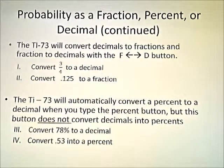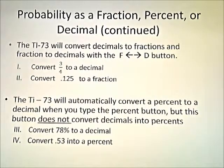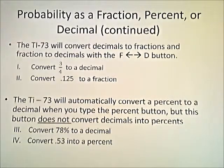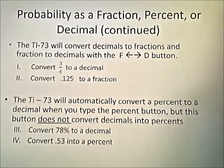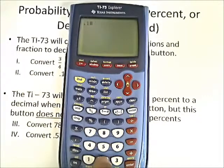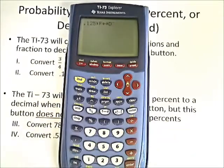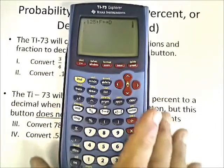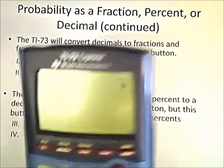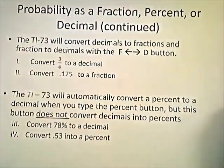We also want to convert 1.25 — actually 0.125 — to a fraction. So we're going to clear the calculator and type in 0.125. We're going to look at the function and enter that, and we get 0.125. That comes out as the fraction one-eighth, so one-eighth would be our answer.